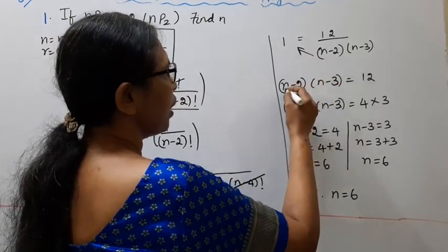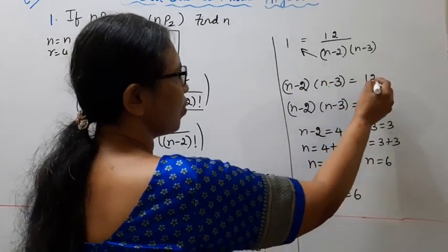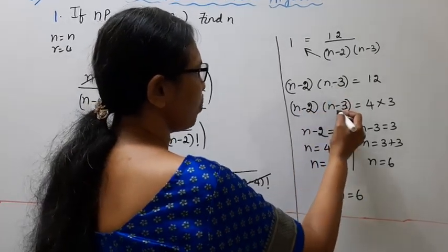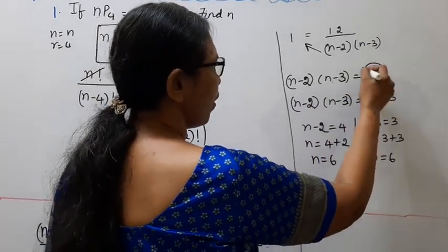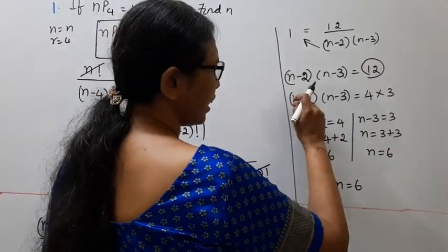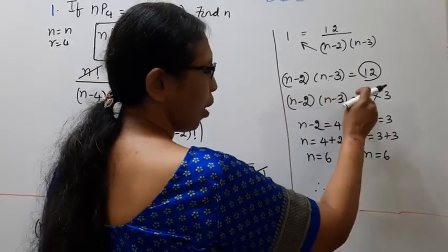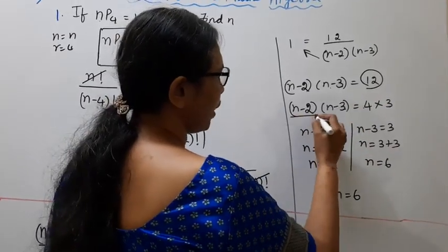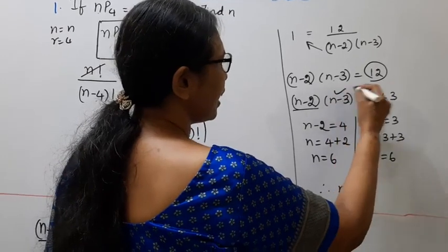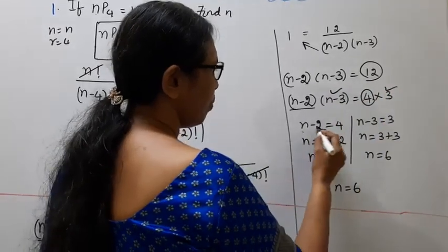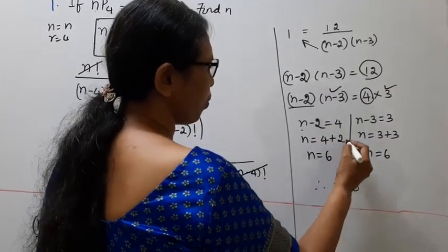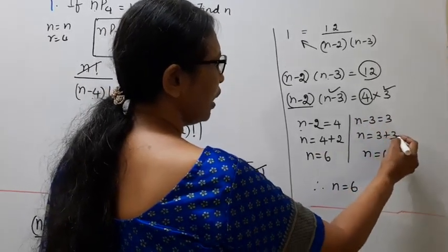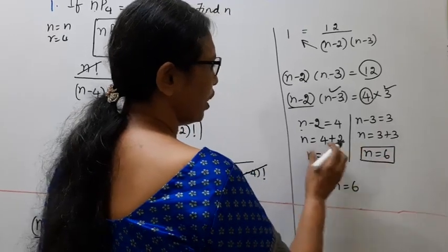Cross multiplying: n minus 2 into n minus 3 equals 12. Recognising that 4 into 3 equals 12, we compare: n minus 2 equals 4, so n equals 6. Also n minus 3 equals 3 confirms n equals 6. Therefore n equals 6.